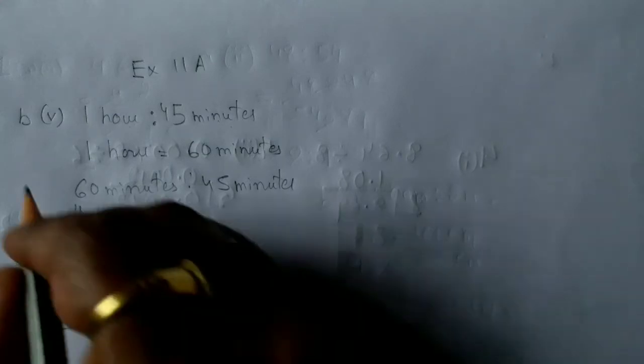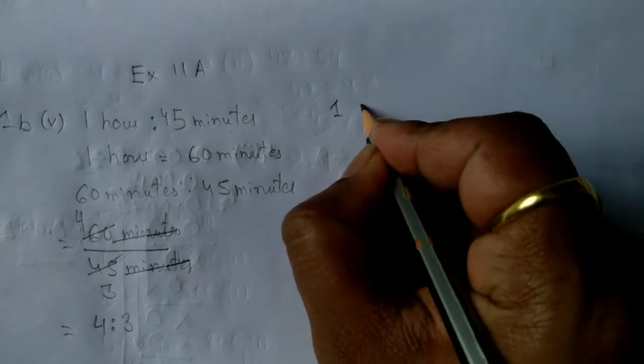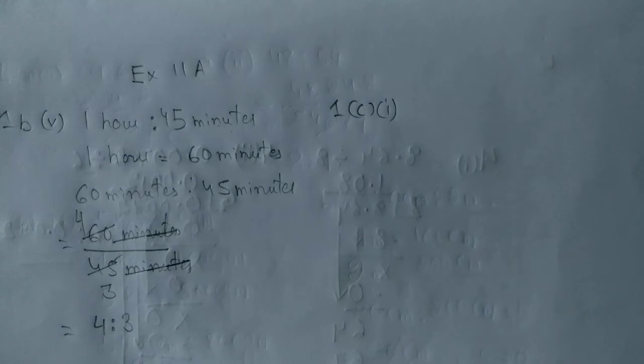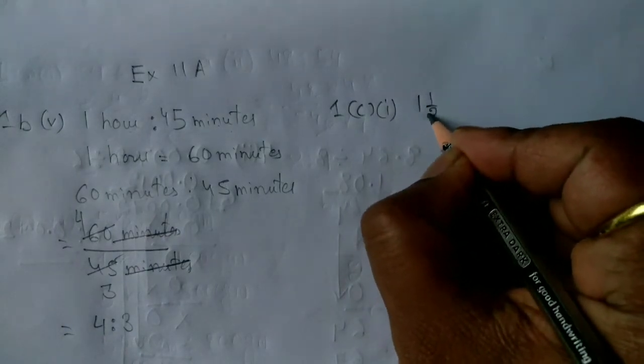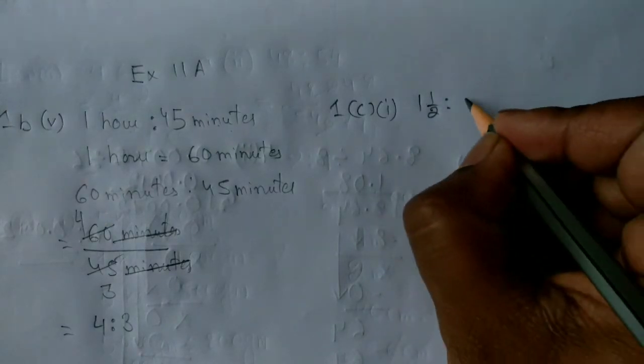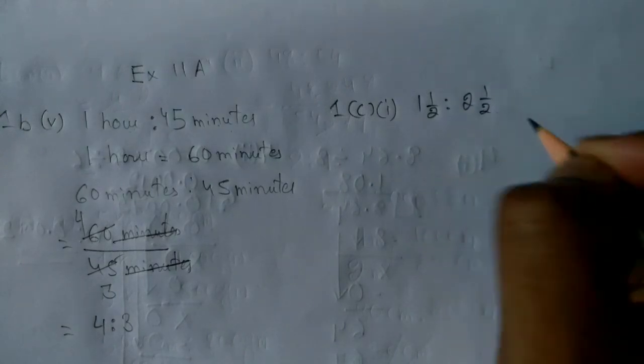This was all about number b5. Now we can go to number c1. The numbers which we were doing were 1, 3, and 6. So now number 1 c1. Please refer your book for the question. The question says 1 and a half, 1 1 upon 2 is to 2 and a half, 2 1 upon 2.